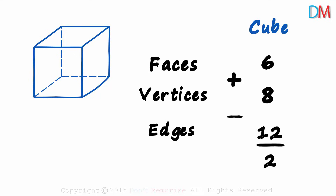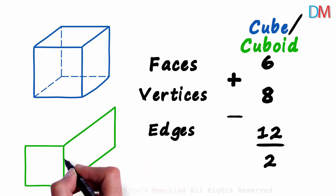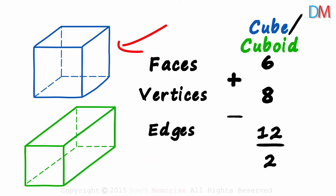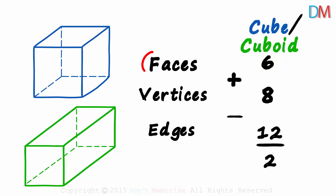Which are the other straight face solids we know of? A cuboid is one — it looks like this. A cube is nothing but a special case of a cuboid where the length, breadth, and height are equal. So a cuboid also has six faces, eight vertices, and twelve edges, and F plus V minus E will give us two.